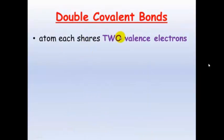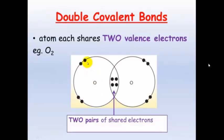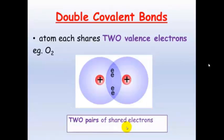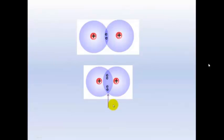Double covalent bonds share two valence electrons from each atom. If we look at oxygen, it has six electrons in its valence shell, so it will share two of another atom's electrons — in this case another oxygen atom. Two pairs of shared electrons make it a double covalent bond. You can see with the electron clouds there are two pairs of electrons forming the double covalent bond.